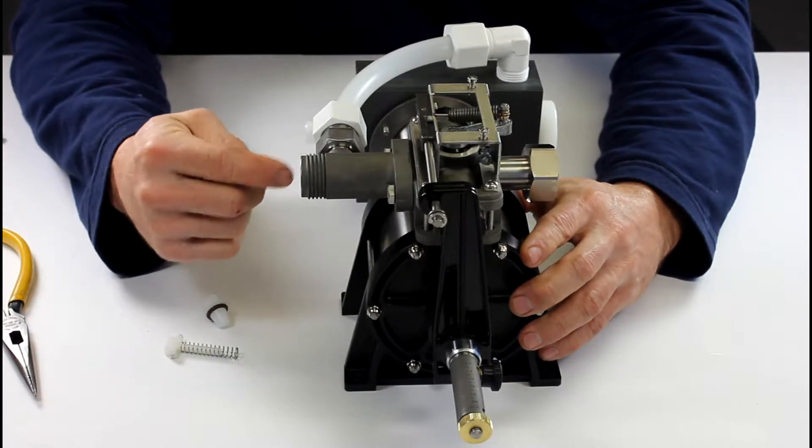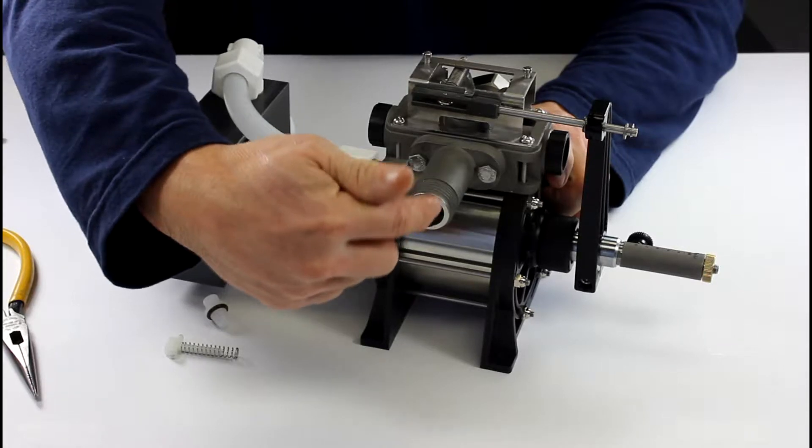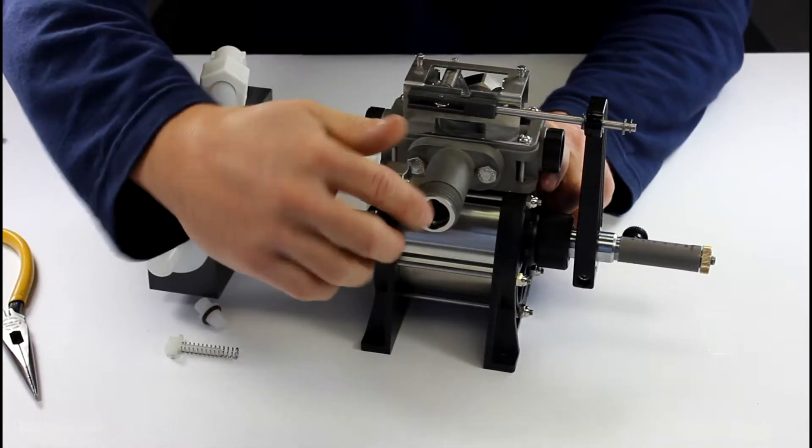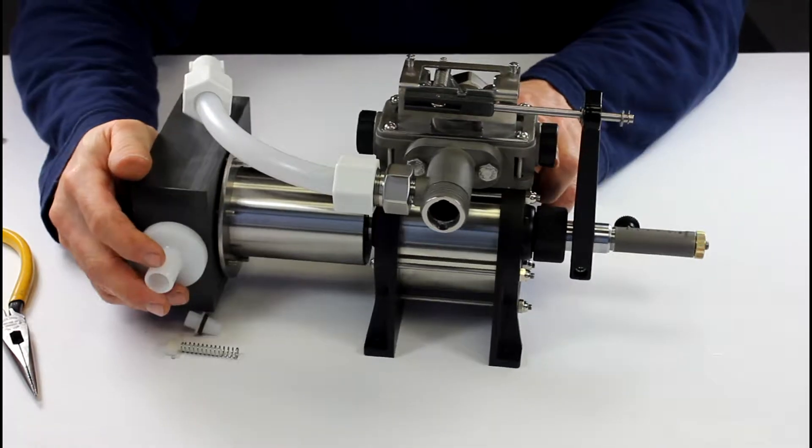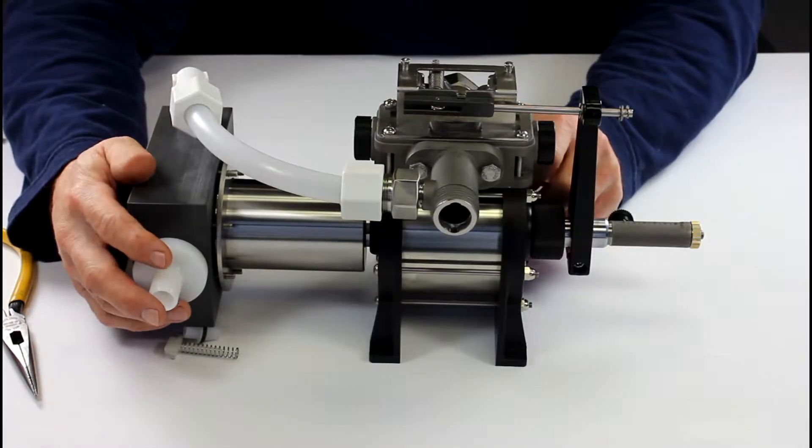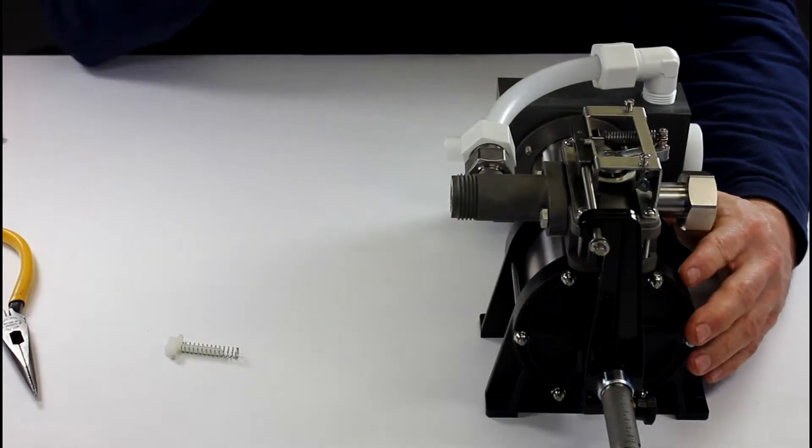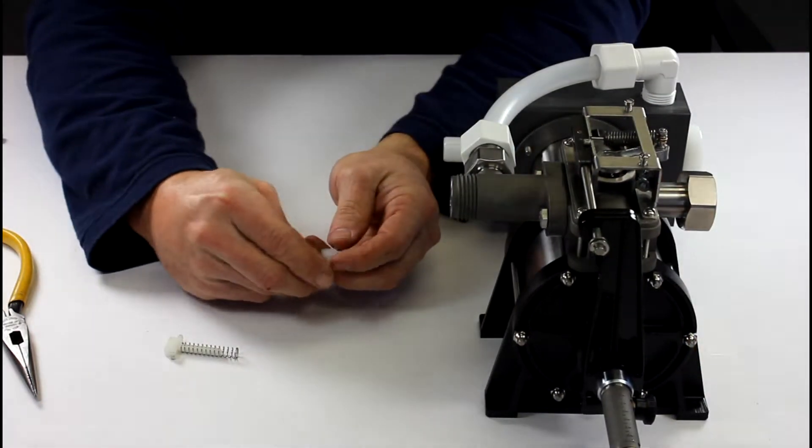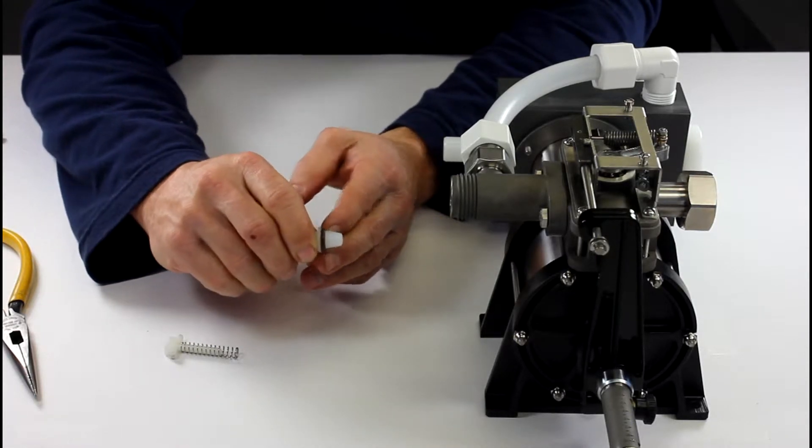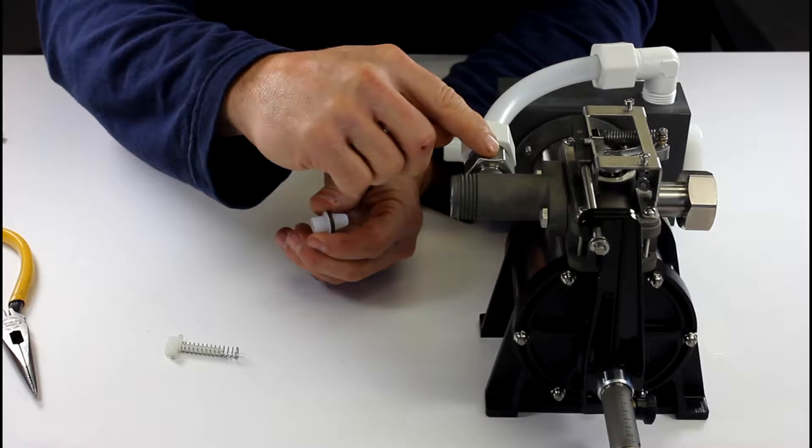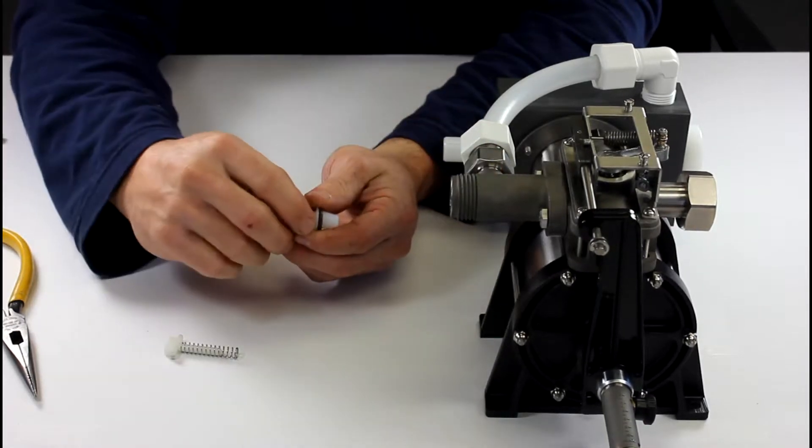Or you can just, if you have the pump not on its feet, you can just tip it and the poppet will come right out. Then I would inspect this hole and see if there's any kind of buildup, gunk, whatever, just to make sure that is clear and free of grime.